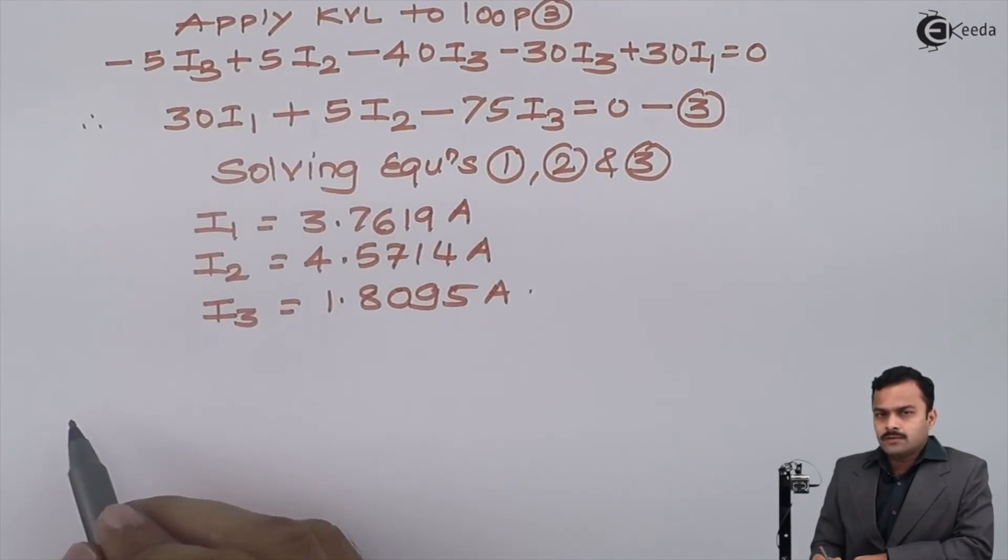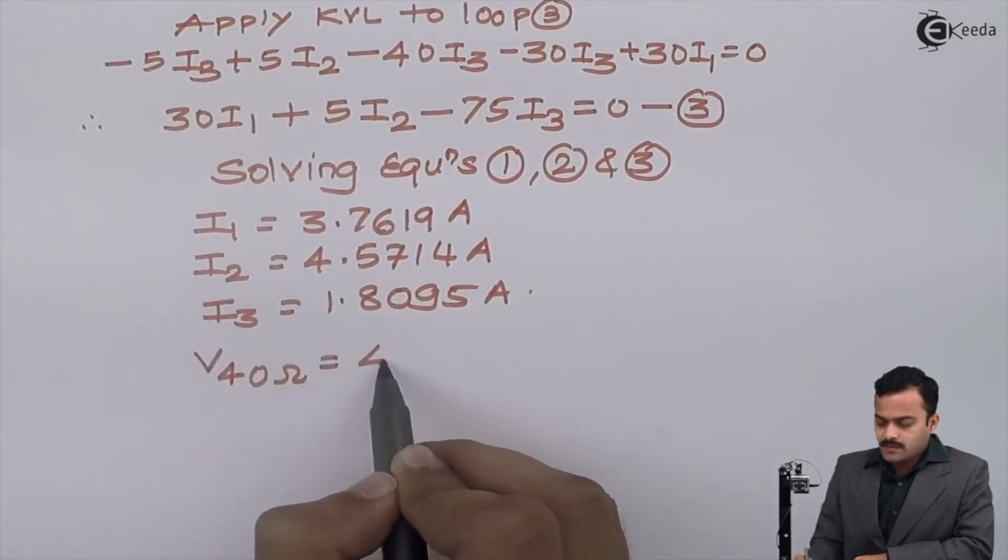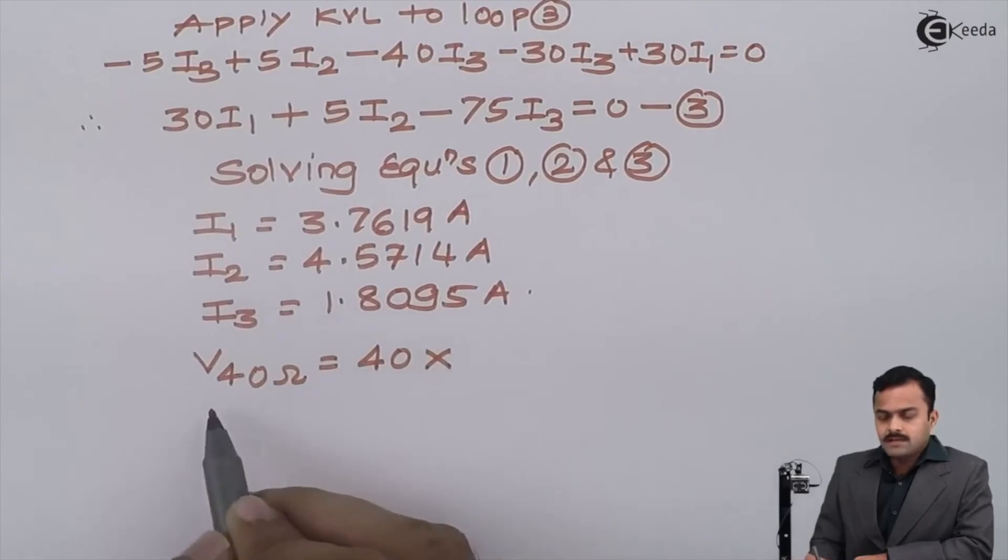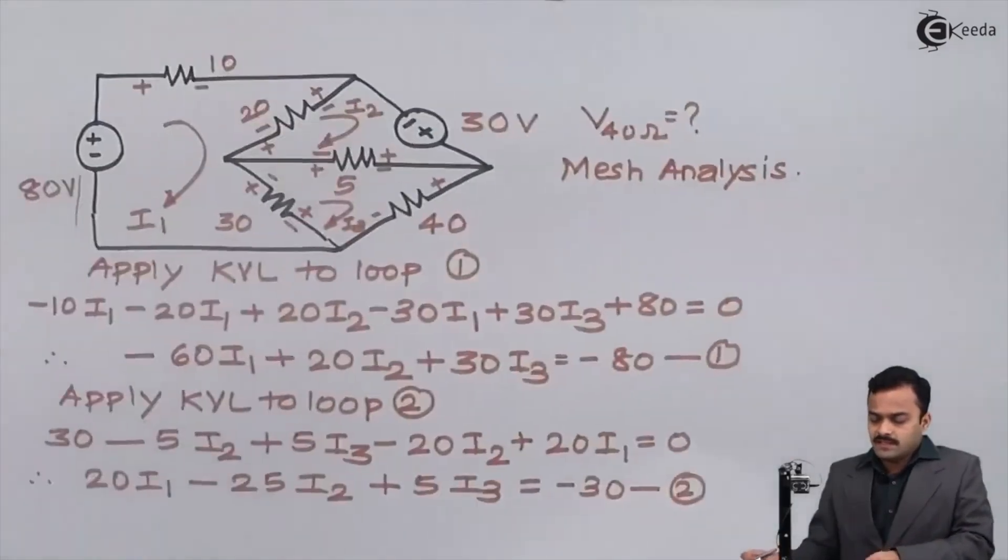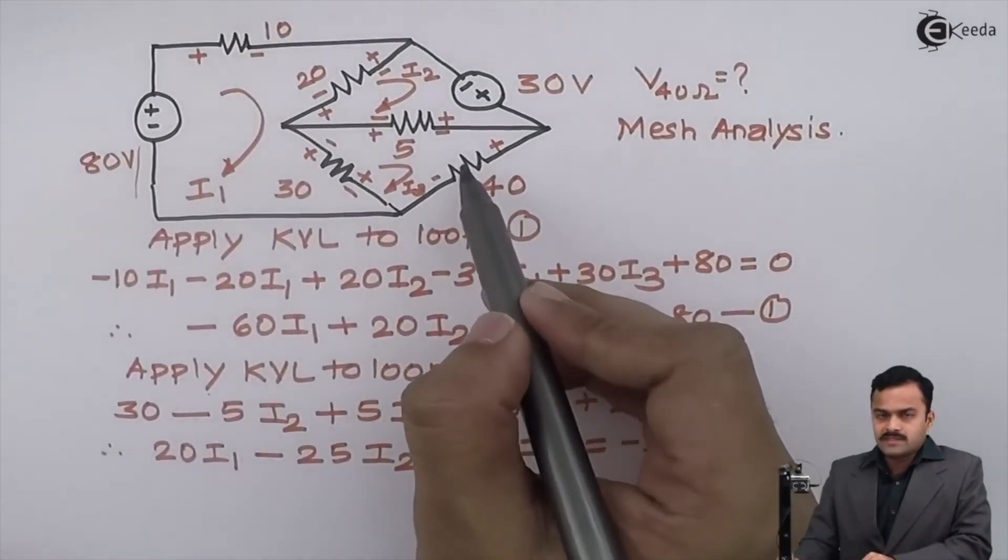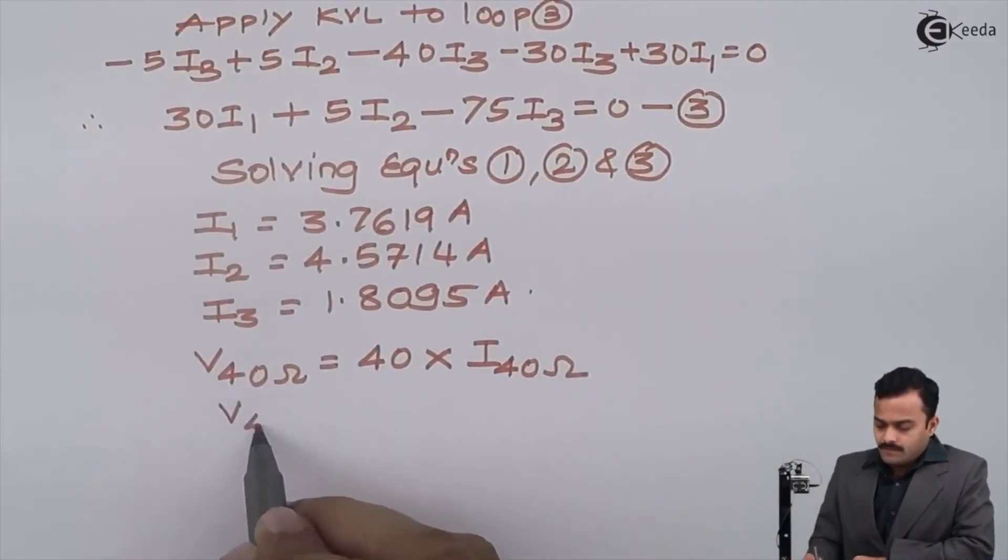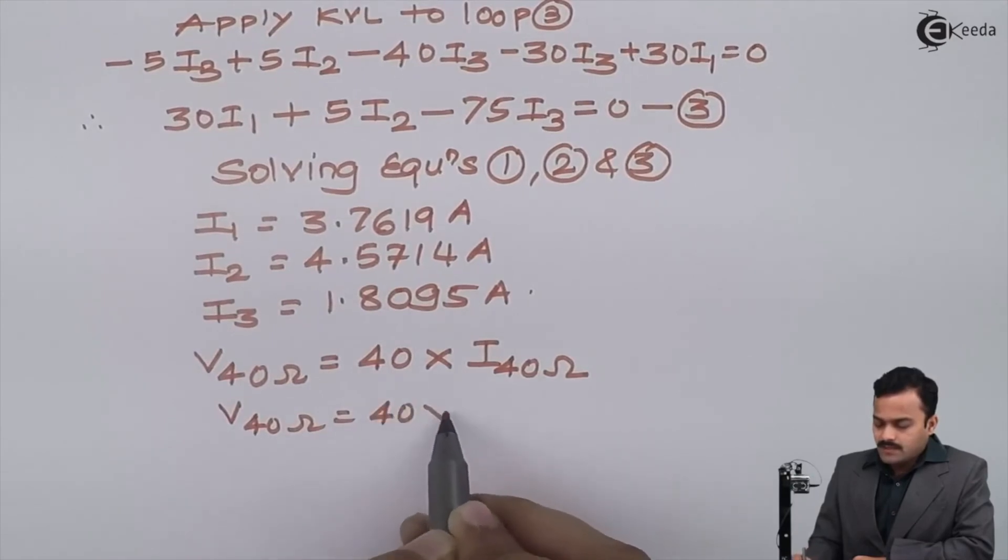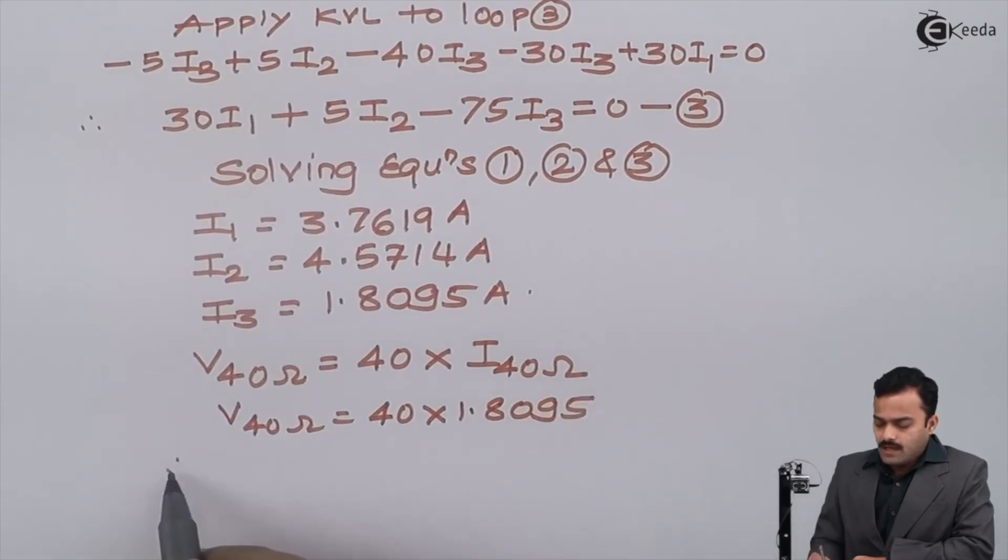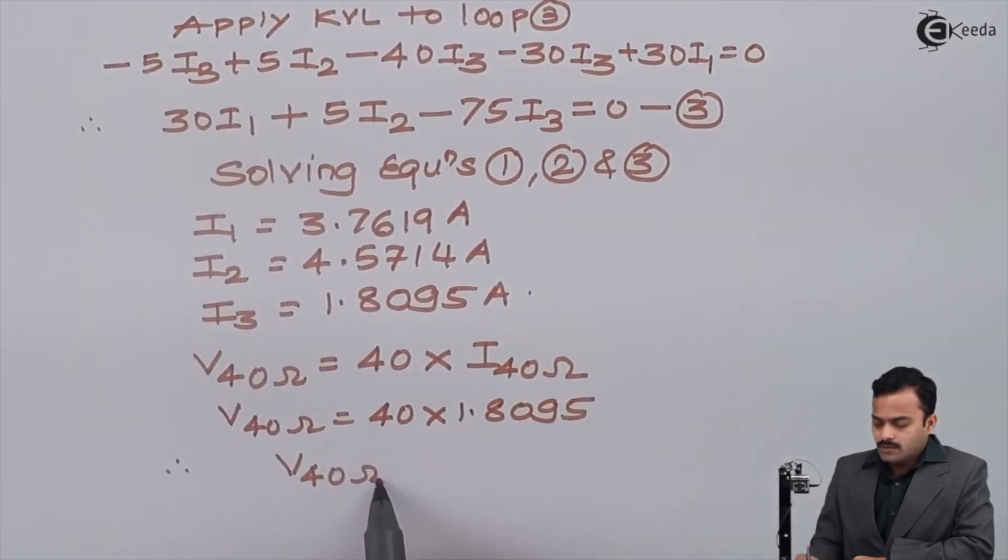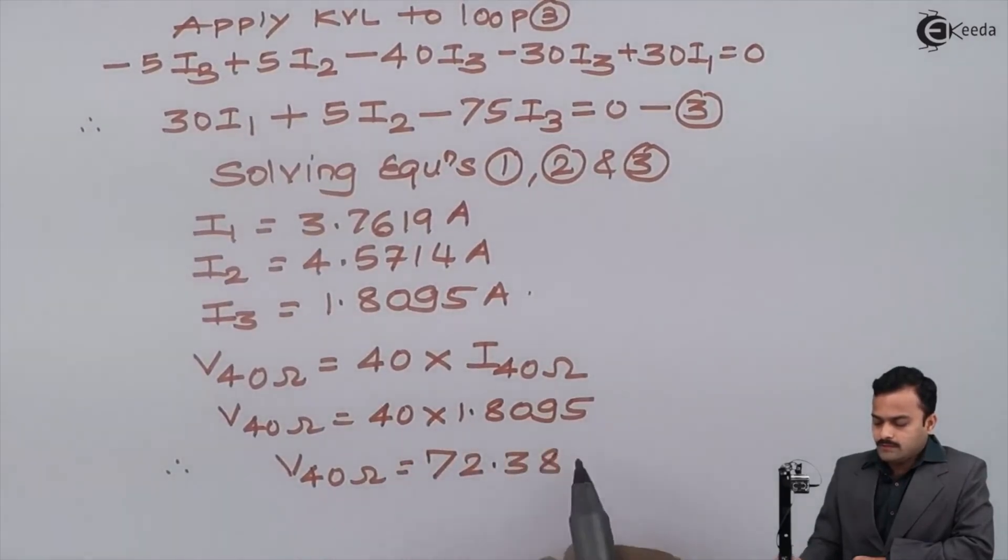In the problem, they have asked what is the voltage drop across 40 ohm. So voltage drop across 40 ohm is given as 40 ohm resistance multiplied by current flowing through the 40 ohm resistance. If you see the circuit, current flowing through the 40 ohm resistance is I3 only. So ultimately, I_40 ohm is nothing but I3, which is 1.8095, and after solving this, voltage across 40 ohm I will get 72.38 volt.